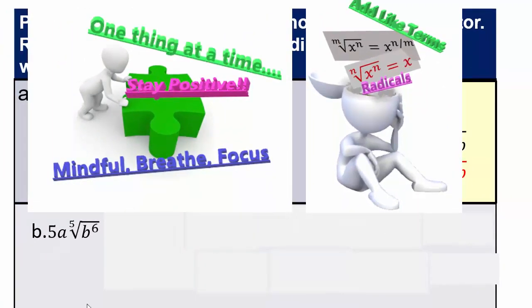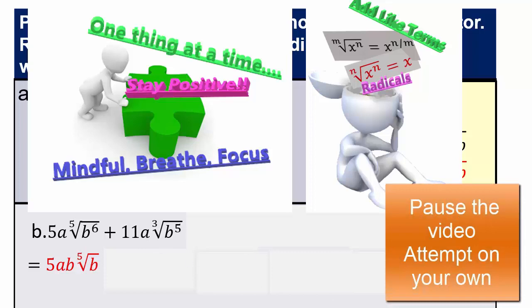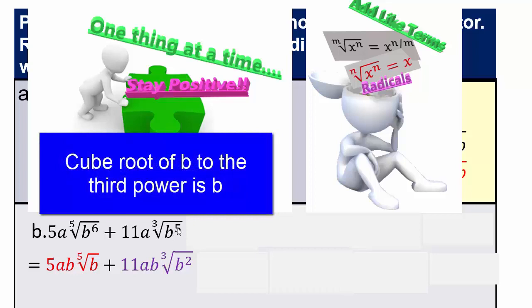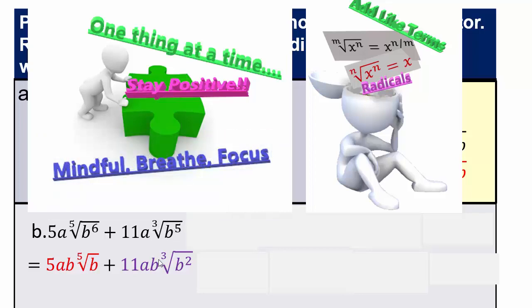We already know that the first quantity is 5ab times the fifth root of b. Now the second quantity: pause the video and let's see what you can do. It's the cube root of b to the fifth. We get 11ab times the cube root of b squared — three of these b's come out as 1b because the cube root of b cubed is b, and then two more b's remain to make b to the fifth.